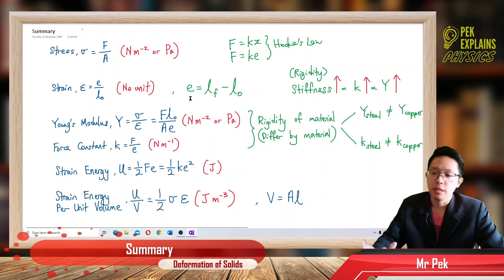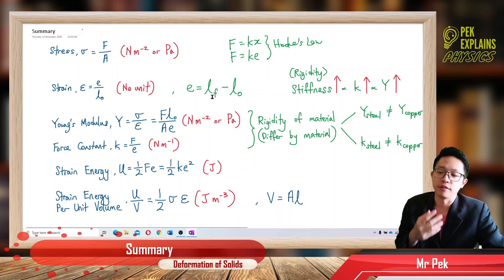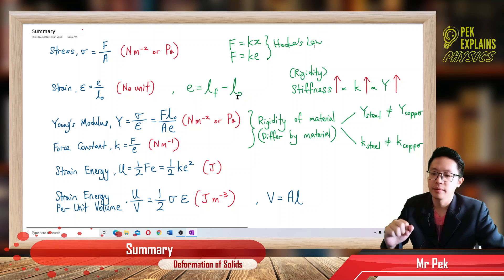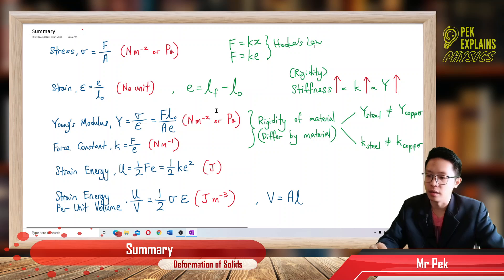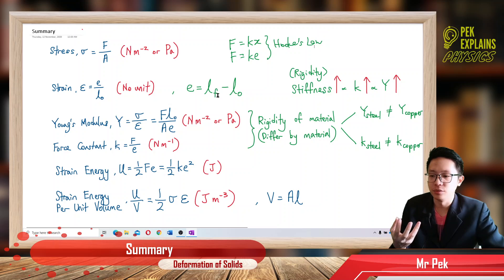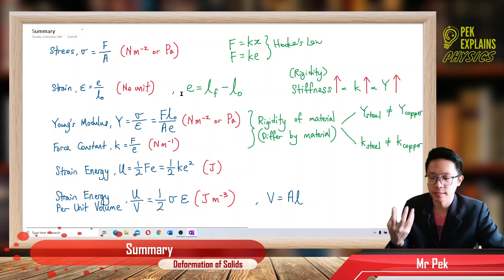How to get elongation? Elongation is the final length minus the initial length. So if you want to get the final length, you use the original length plus elongation.